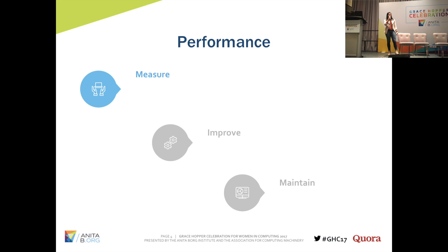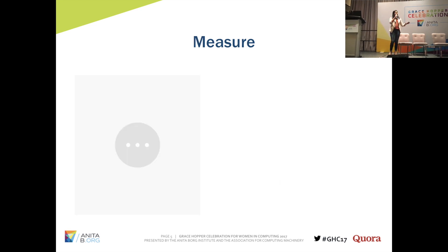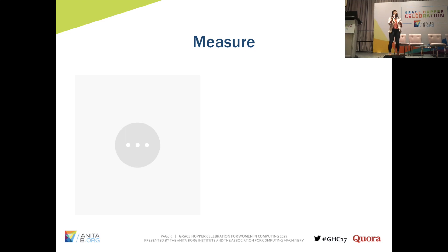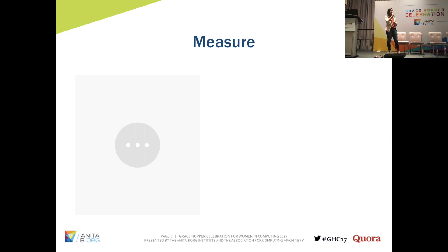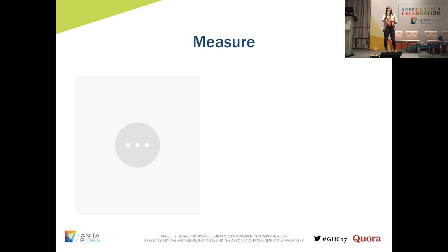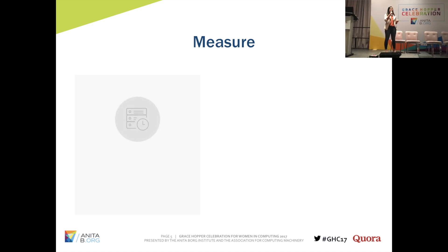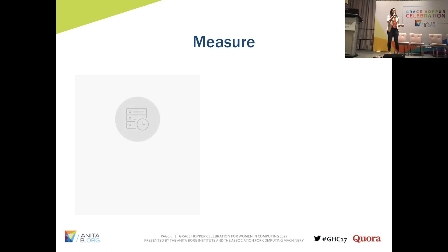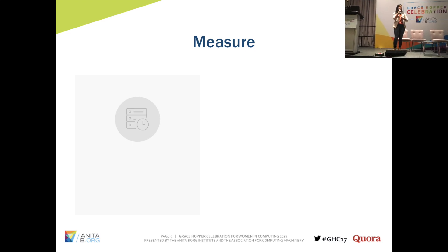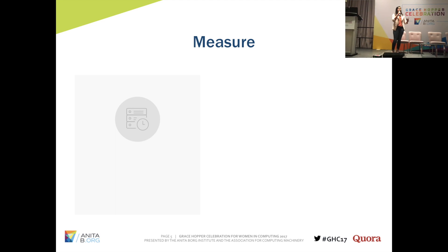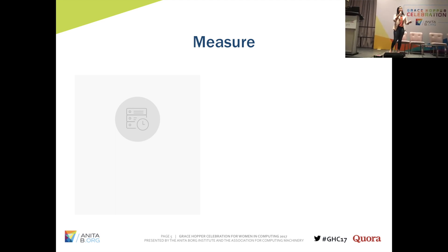Let's get started with measuring. Quora, like many applications you might use, is a server-side-rendered application. Intuitively, when we first set out to measure speed, our first metric was server time — pretty intuitive, right? It measures the computation time it takes to actually execute code that processes the request.